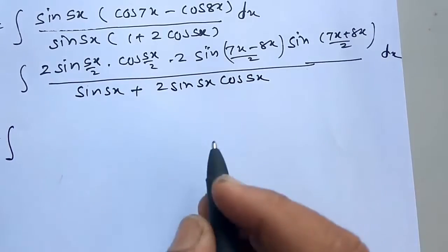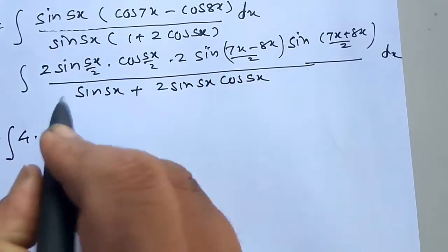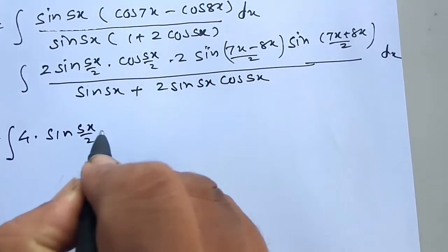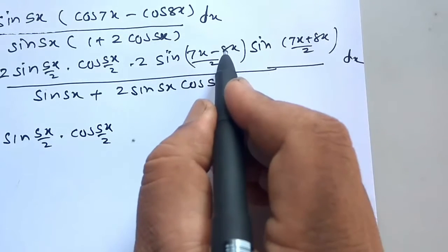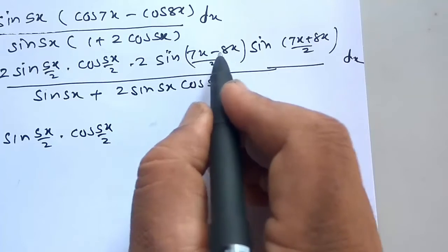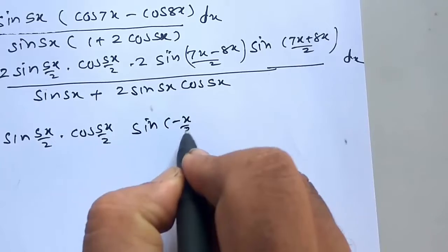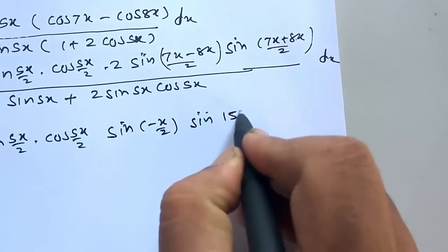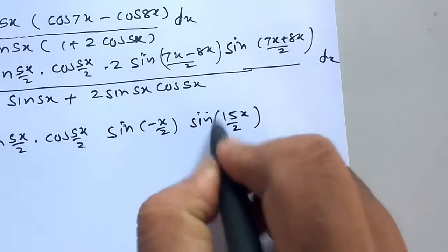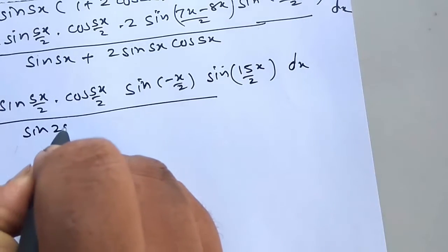It is equal to integration. Here 2 into 2 becomes 4. So it is 4 sin(5x/2) into cos(5x/2). Now 7x minus 8x becomes 5x minus x, divided by 2. So sin of minus x/2 into sin of 15x/2 dx.